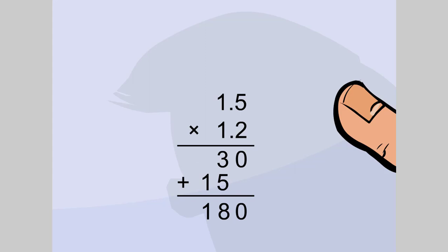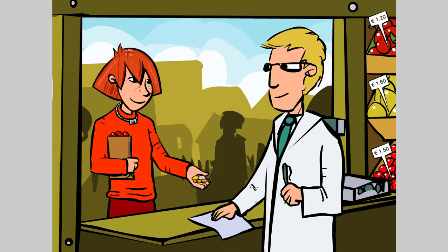Finally, we have to mark the decimal point. There are two digits after the decimal point in the multiplied numbers, so we separate two decimal places in the number obtained. Lina paid 1.8 euro.